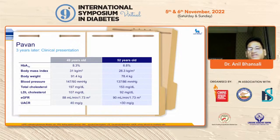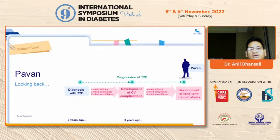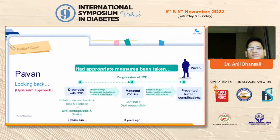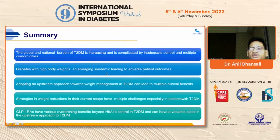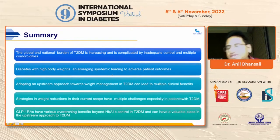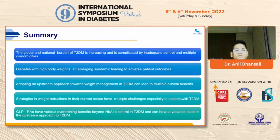We should be very aggressive in targeting obesity. To summarize: the global and national burden of diabetes is increasing, complicated by inadequate treatment and emergence of comorbidities. High body weight is an emergent syndrome leading to adverse patient outcomes. An upstream approach focusing on obesity is key. Semaglutide has demonstrated beneficial outcomes, giving a double advantage, with overarching benefits for comprehensive diabetes control and a well-placed role upstream in the treatment pathway.